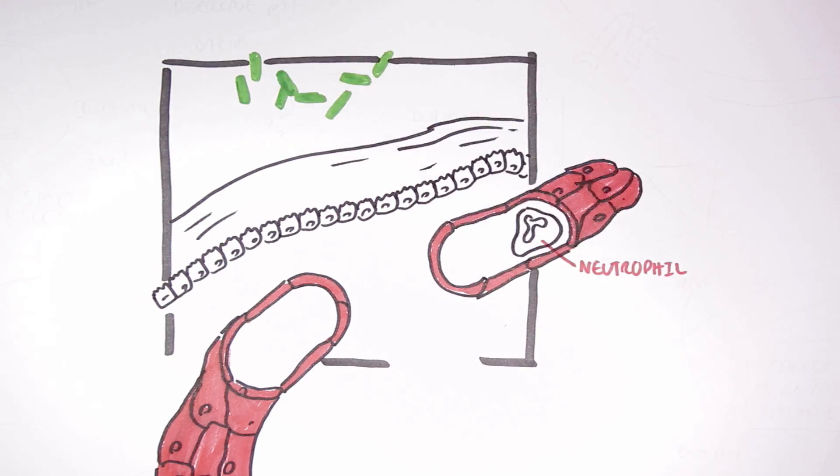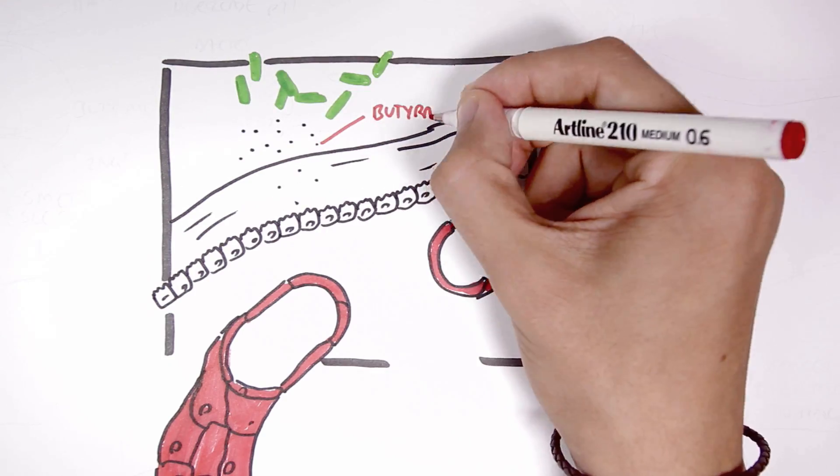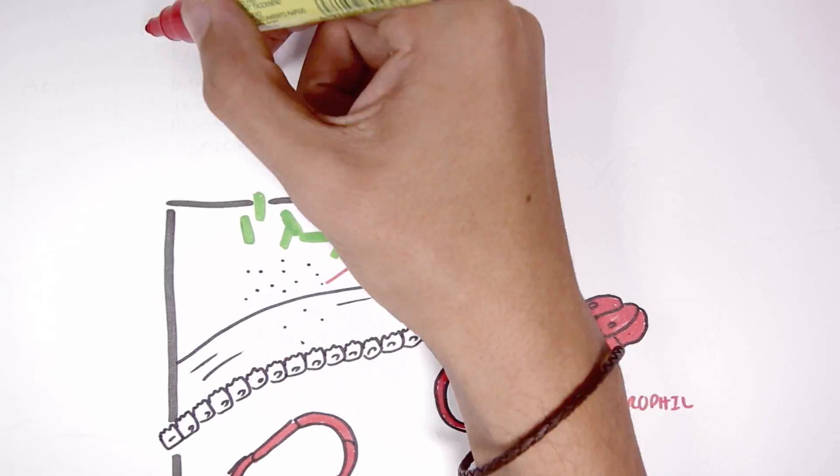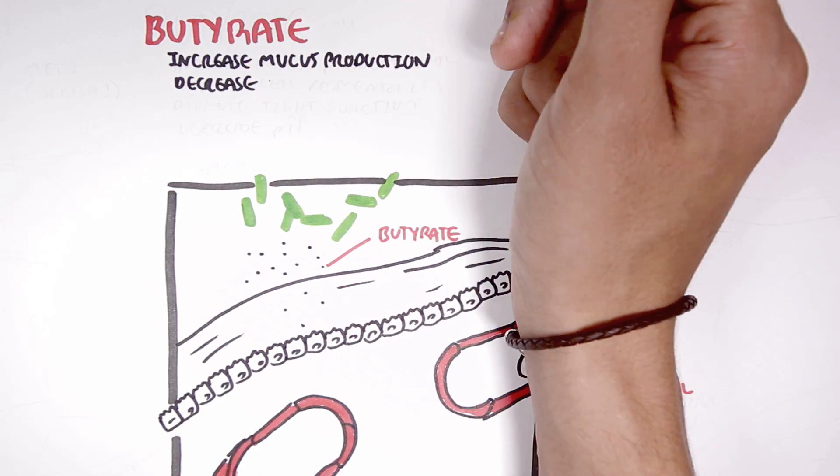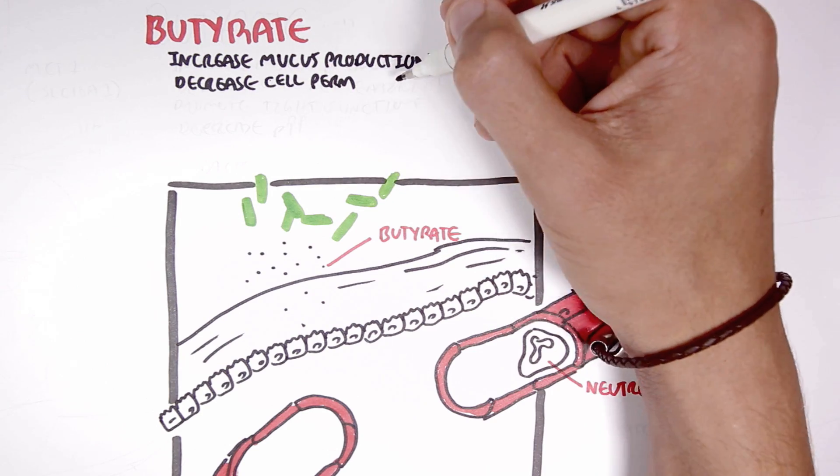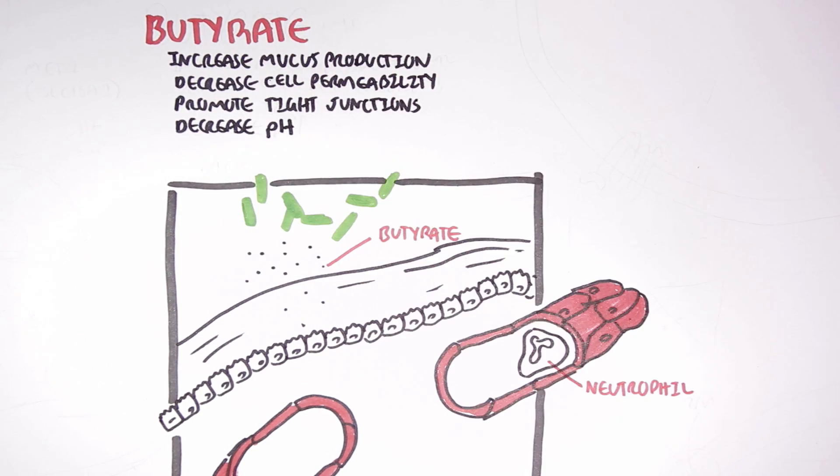Now butyrate, as I mentioned, is produced through bacterial fermentation. The effects butyrate have on the colon in general include increasing mucus production, decreasing cell permeability, promoting tight junctions, and decreasing pH.